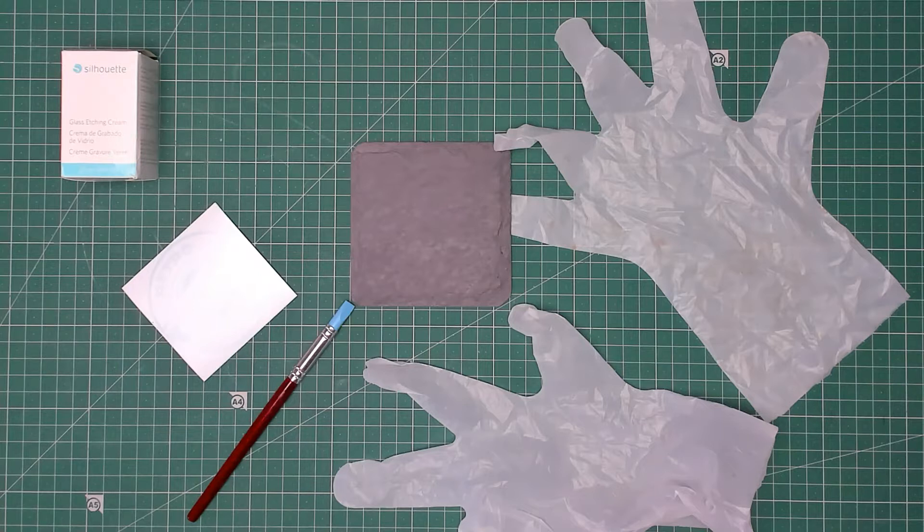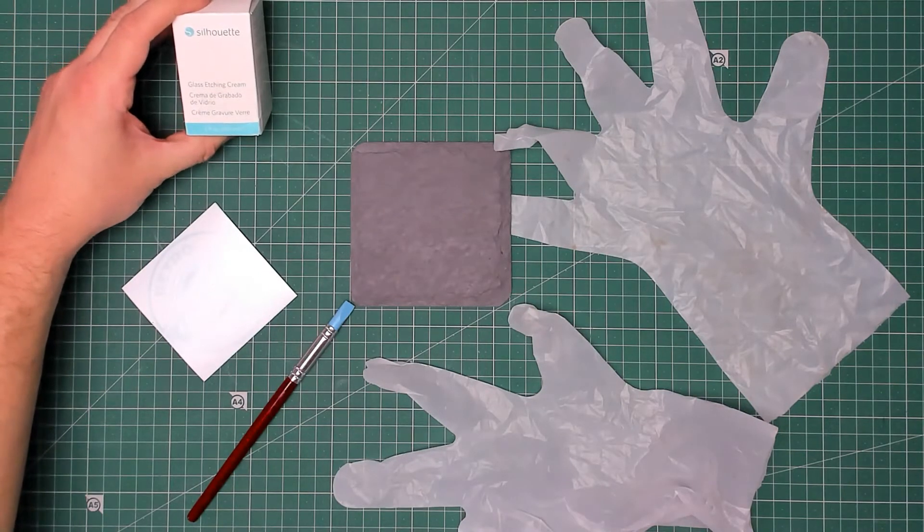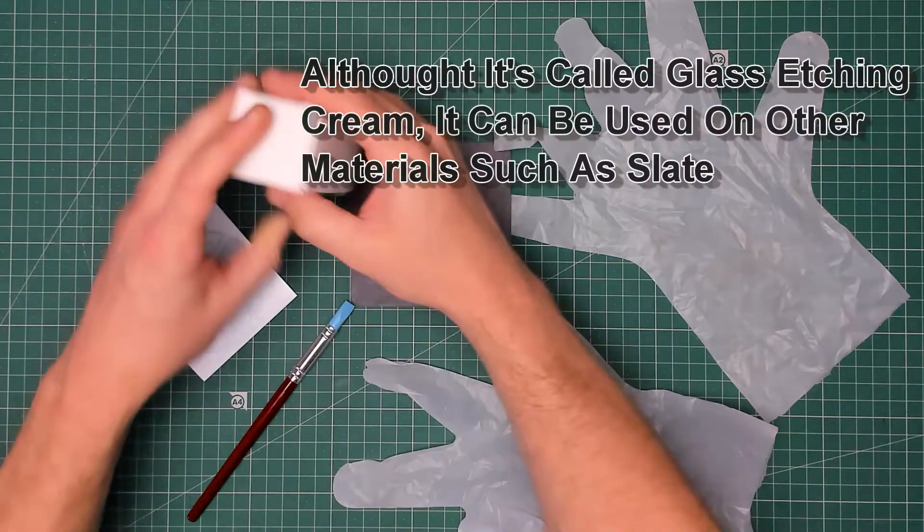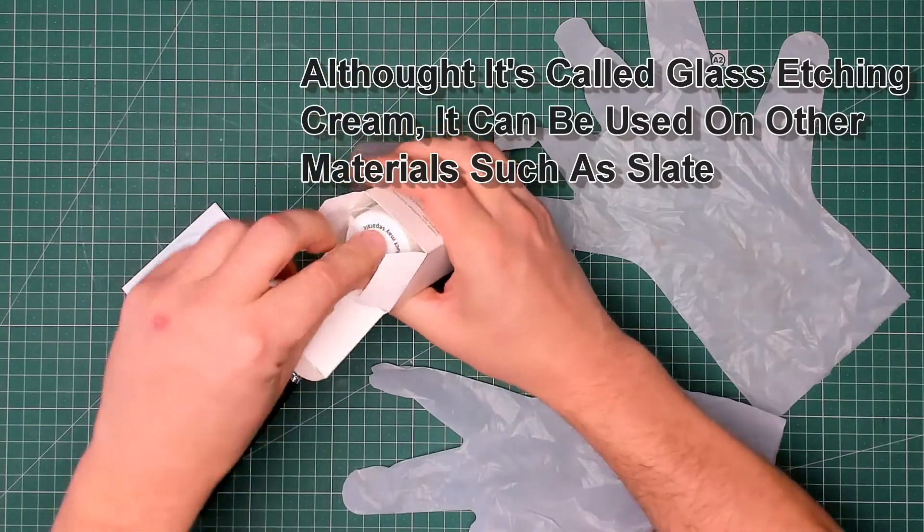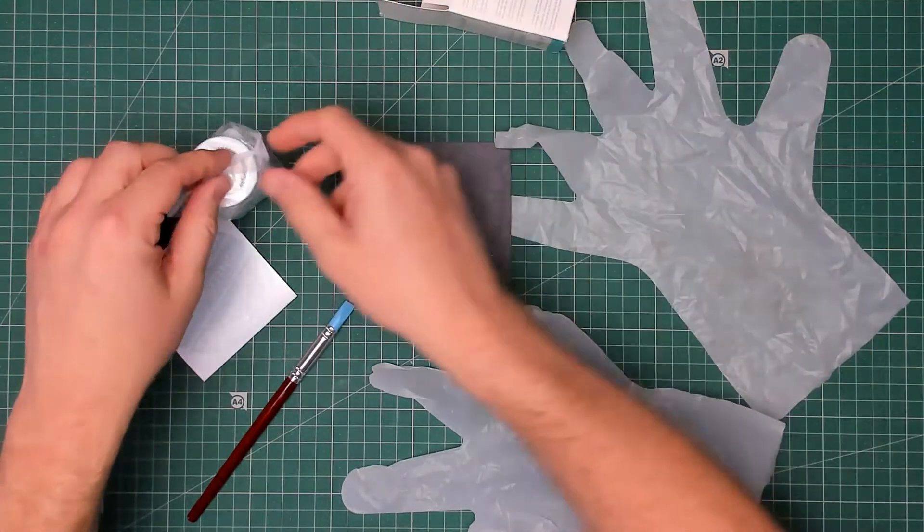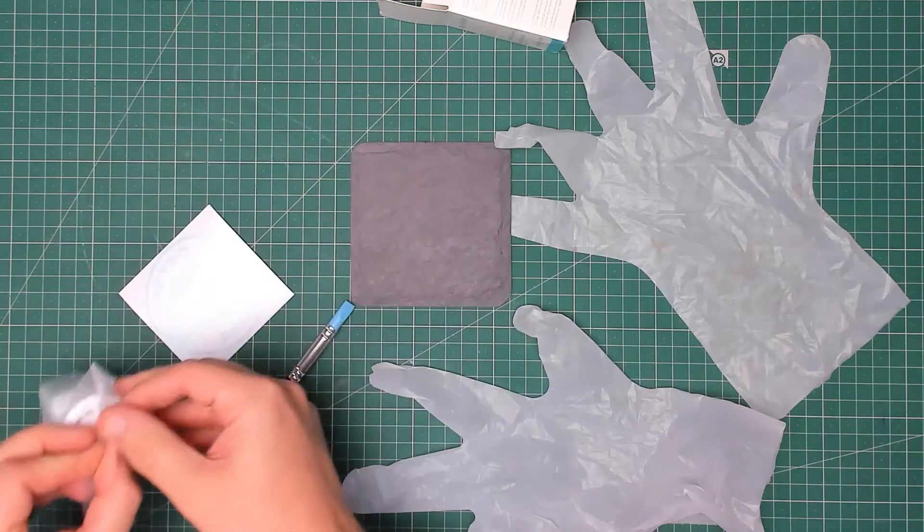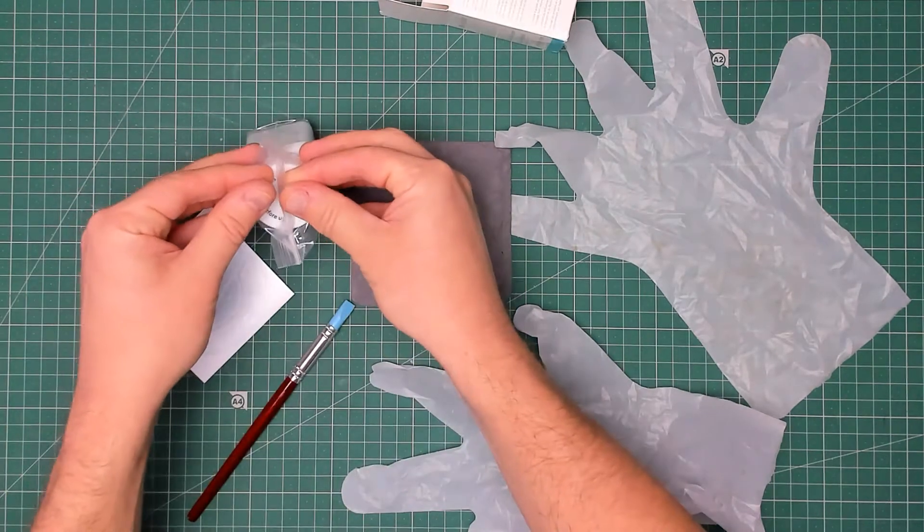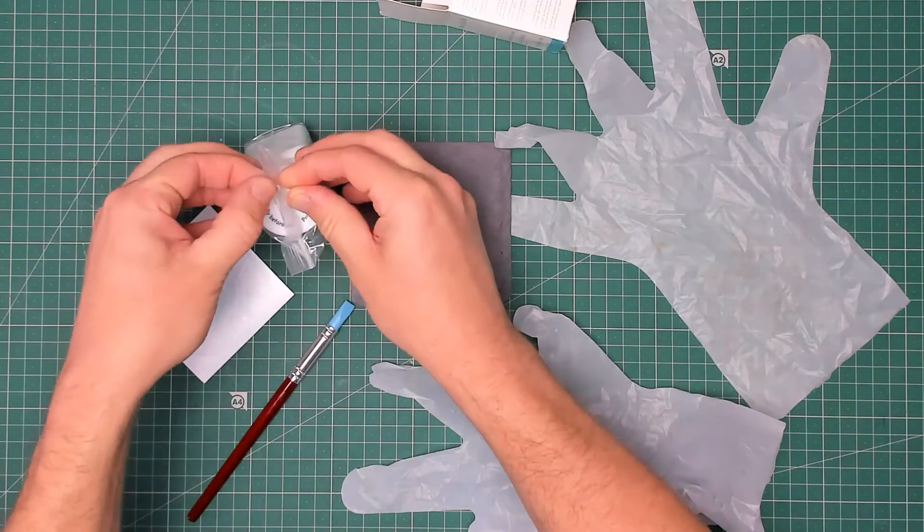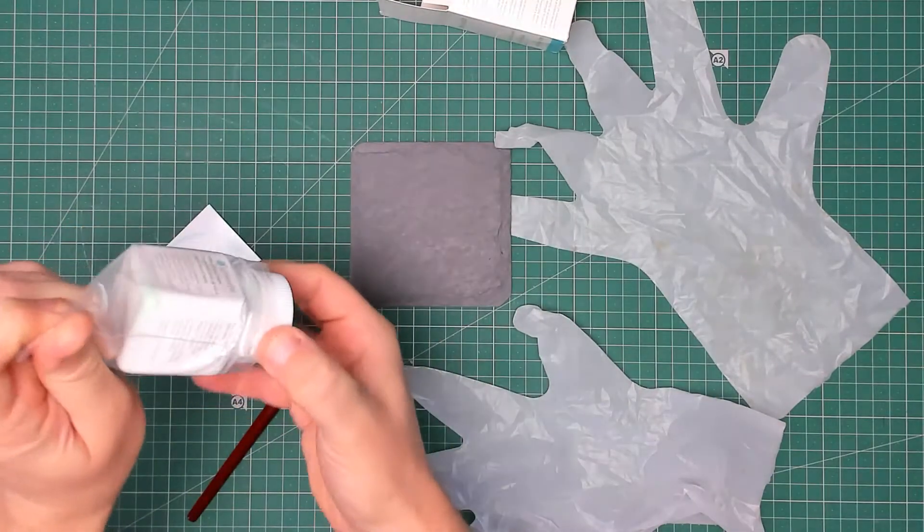And now for something completely different. What I've got here is some glass etching cream from Silhouette. I've never used this stuff before. It comes in a box and there's a plastic bag that's sealed very tight. Inside here is a sealed tub.